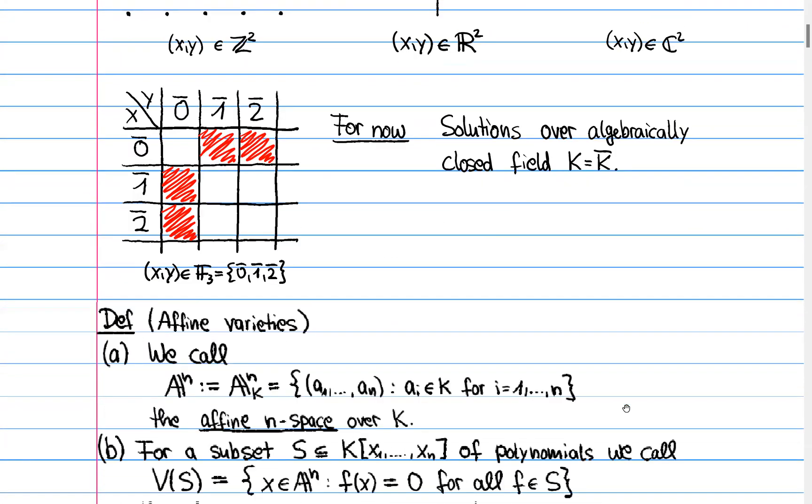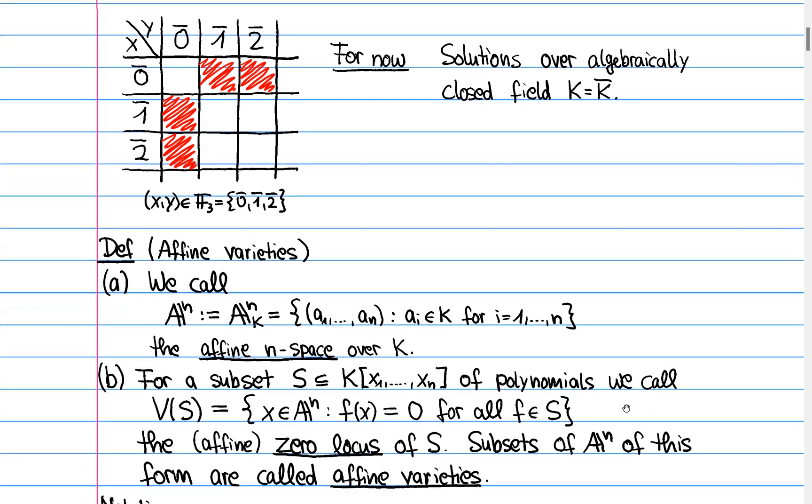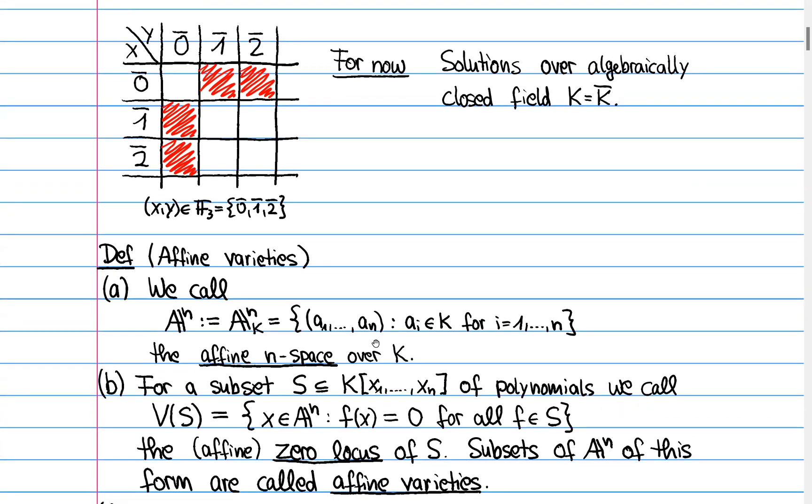And then we can come to the main definition of the course, namely what is an affine variety? And we start by defining the ambient space in which it sits. And there we say that the affine n space over our base field k is just the collection, the set of all collections of n numbers in the field k.